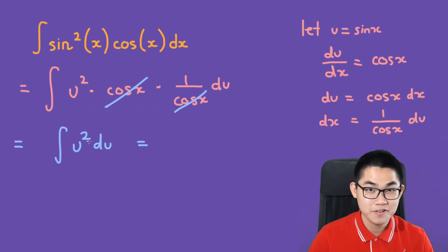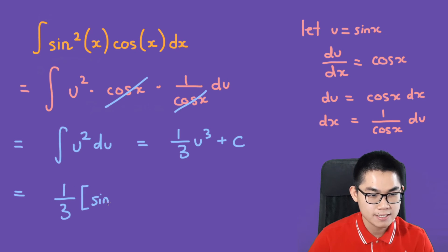The antiderivative of this will be 1/3 times u³ plus c, and we change the u back to sin(x). So, 1/3 times sin³(x) plus c.